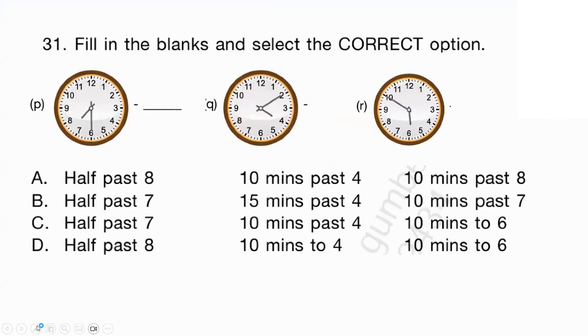Moving on to the 31st question. Fill in the blanks and select the correct option. The first clock. What's the time shown in the clock? 7.30. That's half past 7. Present in option B and C. Our possible answers is option B and C. The next clock shows 4.10. That's 10 minutes past 4. Option C. And the third clock shows 5.50 or 10 minutes to 6 again over here. So, option C is our correct answer.